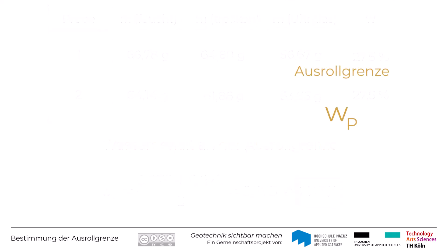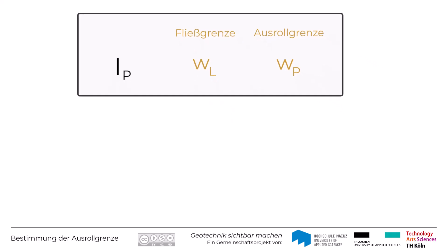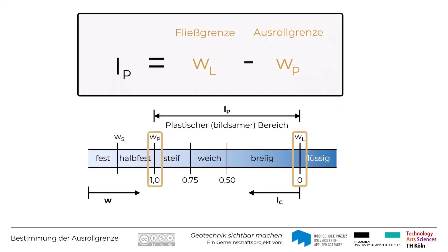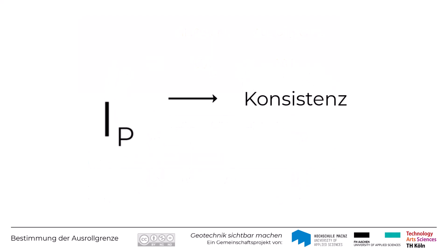Zusammen mit dem Wassergehalt an der Fließgrenze WL dient der Wassergehalt an der Ausrollgrenze zur Bestimmung der Plastizitätszahl Ip, das ist WL minus WP. Dies ist ein Maß dafür, wie sehr sich eine kleine Änderung des Wassergehalts auf den Zustand des Bodens, genauer gesagt dessen Konsistenz, auswirkt. Außerdem ist der Wassergehalt an der Ausrollgrenze ein wichtiger Faktor für die Klassifizierung fein- und gemischtkörniger Böden.